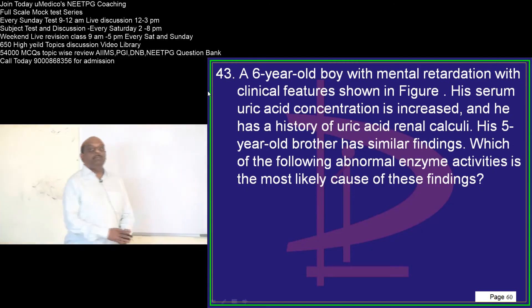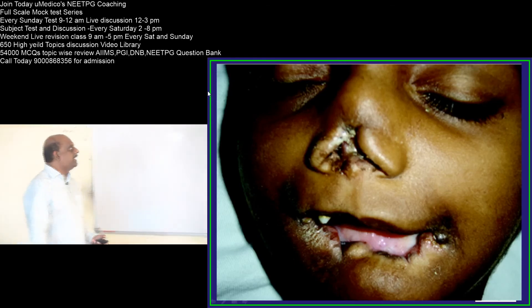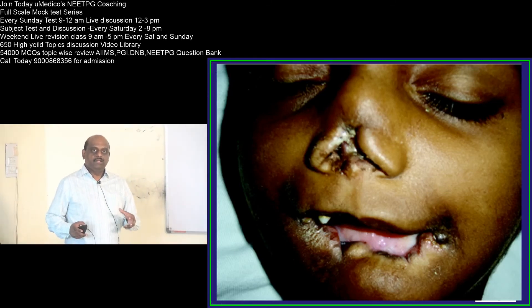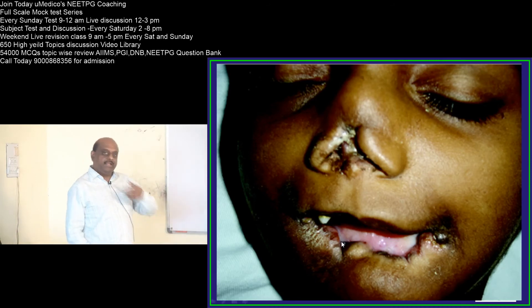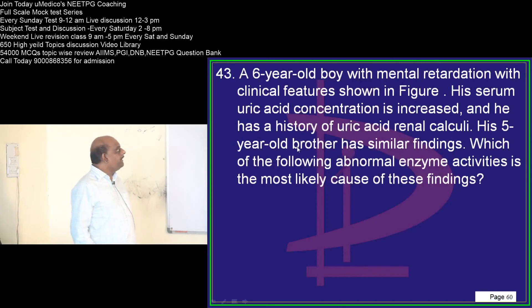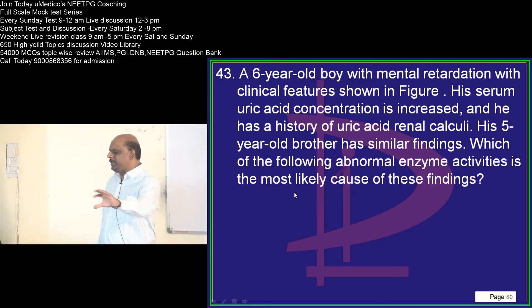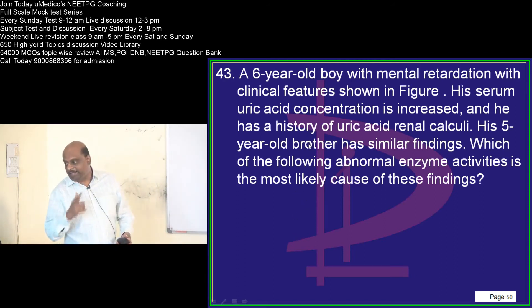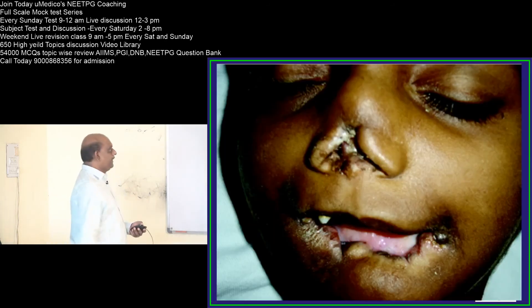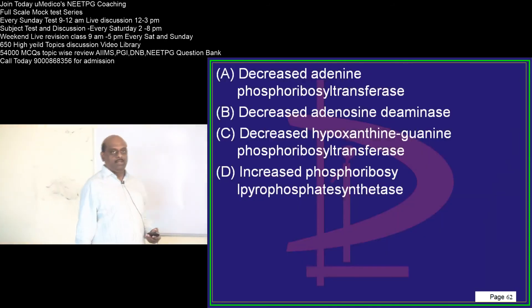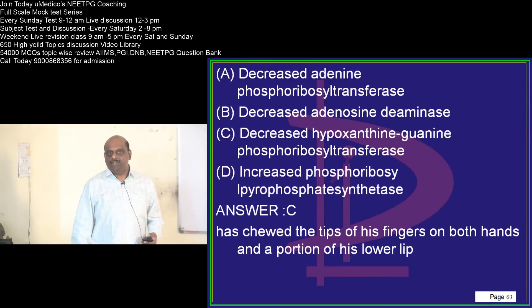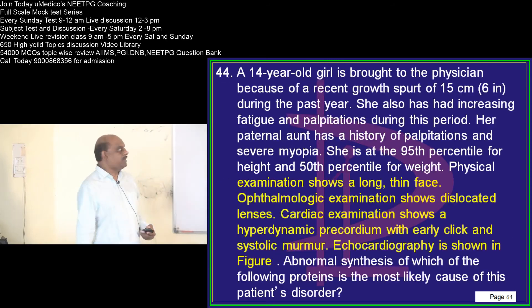A six-year-old has mental retardation with these clinical features: self-mutilation — biting his own nose and eating his own lips — and his uric acid levels are high. Self-mutilation plus hyperuricemia — what comes to mind? Typically, it is a case of Lesch-Nyhan syndrome, which involves decreased hypoxanthine-guanine phosphoribosyltransferase — HGPRT deficiency.